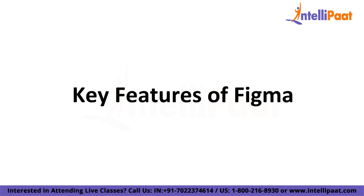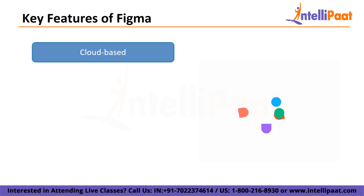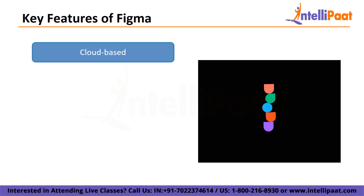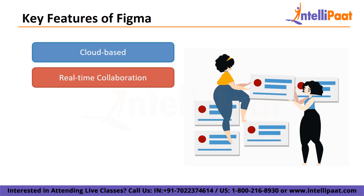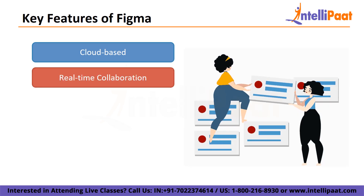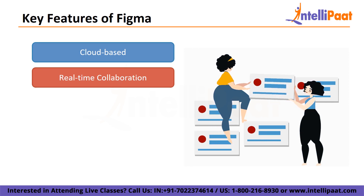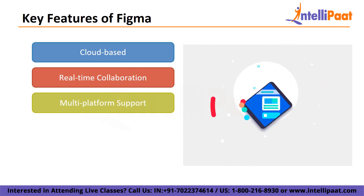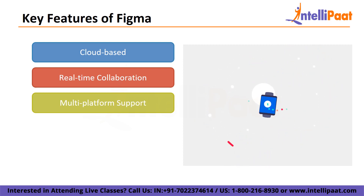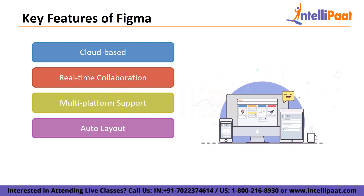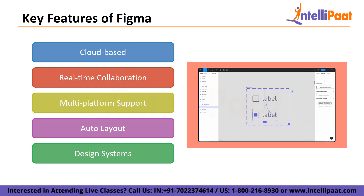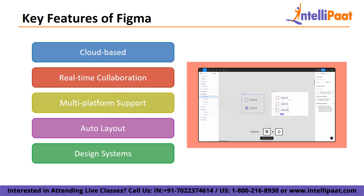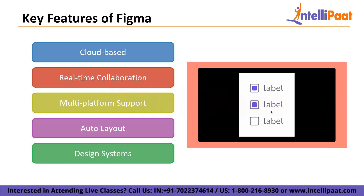Let's talk about some of the key features of Figma. Figma has many key features that make it a stellar and popular service throughout the UI design industry. First is cloud-based — Figma is a cloud-based tool that can be accessed from any computer with an internet connection, allowing remote teams to collaborate on designs. Second is real-time collaboration — Figma allows multiple designers to work on the same design at the same time, making it simple to receive feedback and make changes in real-time. Next is multi-platform support — Figma is available on web browsers, desktop apps for Mac and Windows, and mobile apps for iOS and Android. Fourth is auto-layout — Figma's auto-layout feature enables designers to create dynamic designs that automatically adjust to different content and screen sizes. Finally, design systems — Figma enables designers to create and manage design systems, making it simple to maintain consistency and reuse design elements across multiple projects.